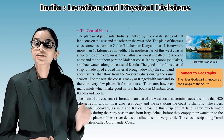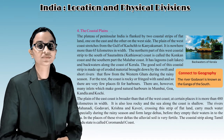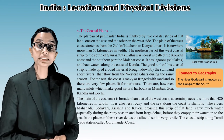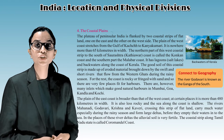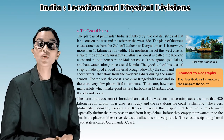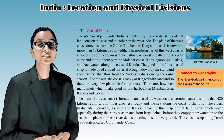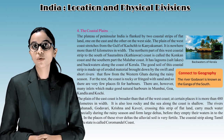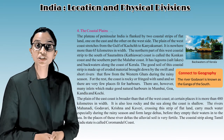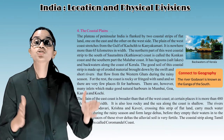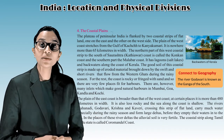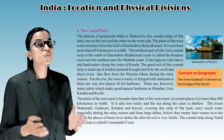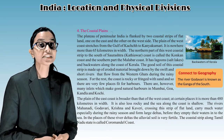Connect to geography: The river Godavari is known as the Ganga of the South. The plain of the east coast is broader than that of the west coast, at certain places more than 480 kilometers in width. It is less rocky and the sea along the coast is shallow. The rivers Mahanadi, Godavari, Krishna, and Kaveri cross this strip carrying much water, especially during the rainy season, and form large deltas before emptying into the sea. The alluvial soil in the river delta regions is very fertile.